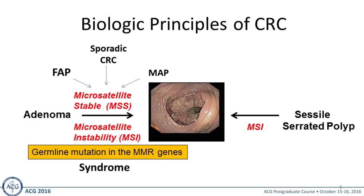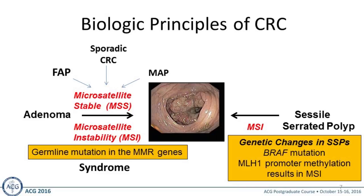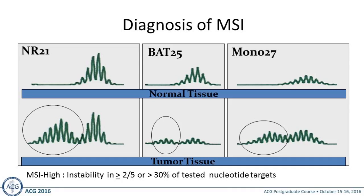The causes of microsatellite instability include germline mutations in the mismatch repair genes, or genetic changes within sessile serrated polyps. Sessile serrated polyps are also characterized by BRAF mutations and MLH1 promoter methylation. These are things you need to keep in mind on a board exam or when thinking about patients with microsatellite unstable tumors.